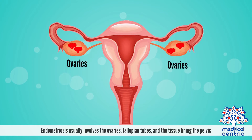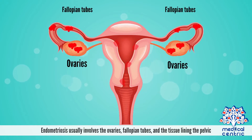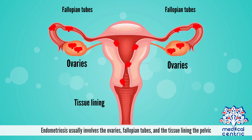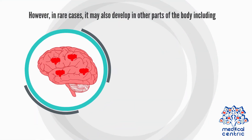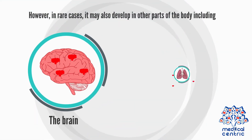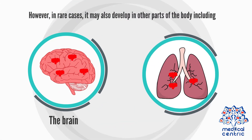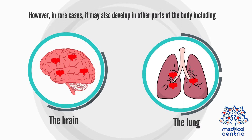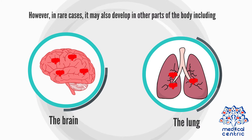Endometriosis usually involves the ovaries, fallopian tubes, and the tissue lining the pelvic organs. However, in rare cases, it may also develop in other parts of the body, including the brain or lung.